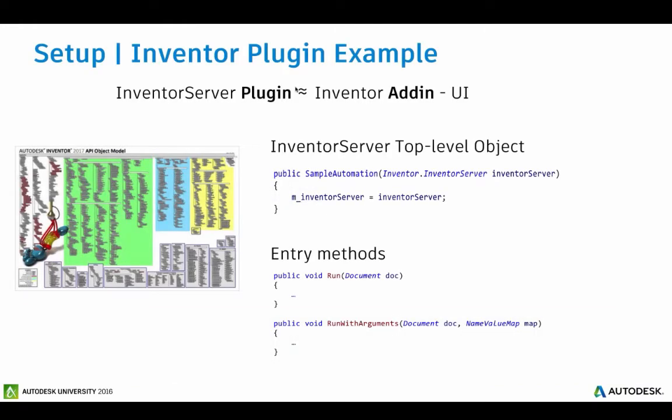The first thing mentioned in the setup phase: you can think of a plugin as roughly equivalent to an Inventor add-in without any UI. So it gives you full access to the Inventor API to automate whatever workflow you want to automate in the cloud. The interesting point is you have a top-level object — all the examples shown here are in C# — you could code these in any Inventor API language.